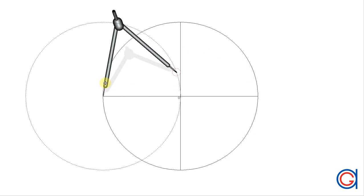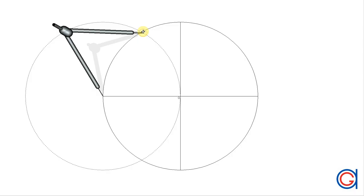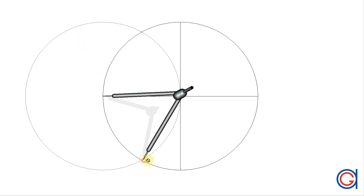The next step now, setting our compass to the length of the radius and centered on the left end of the horizontal diameter, we scribe two arcs above and below intersecting the circumference at two points, as can be seen here in the video.